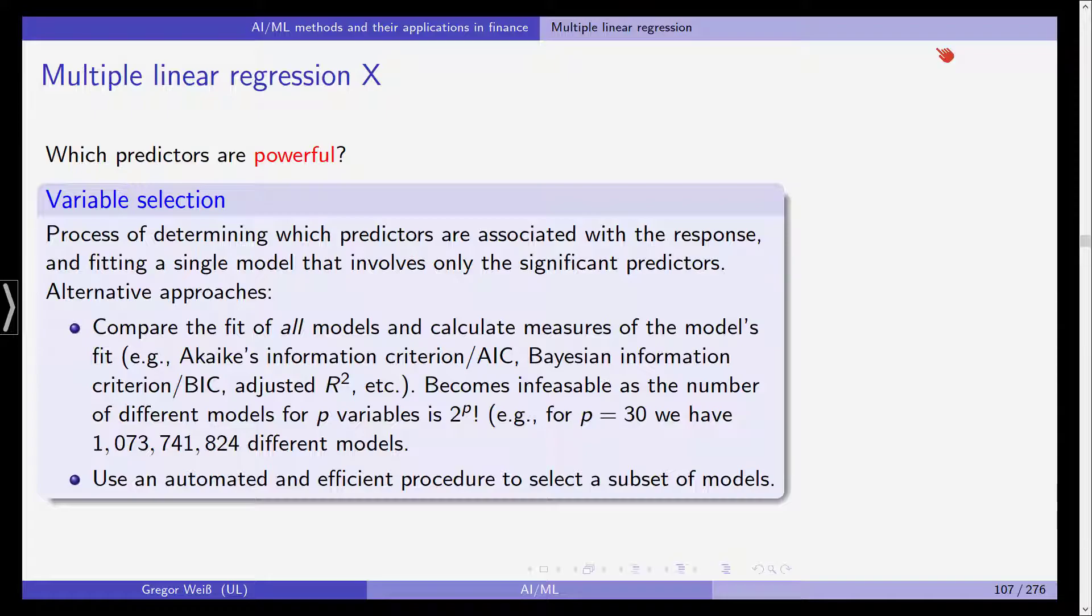We have several alternative approaches at our disposal. The first one is that we compare the fit of all models and calculate measures of the model's overall fit. You can use, for example, Akaike's information criterion AIC, the Bayesian information criterion or BIC, adjusted R squared, but this would be a brute force approach where we estimate all possible models and this will become infeasible quite quickly as the number of different models for P variables is 2 to the power of P.